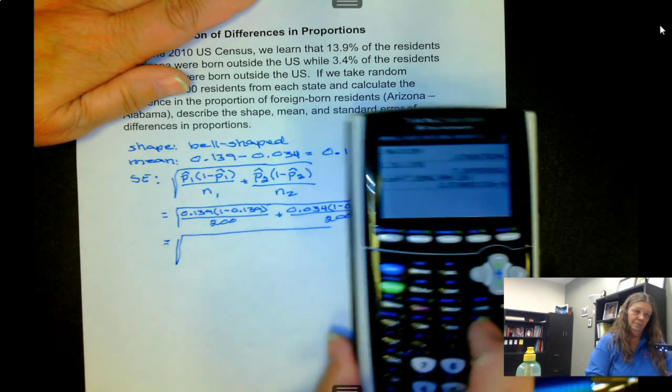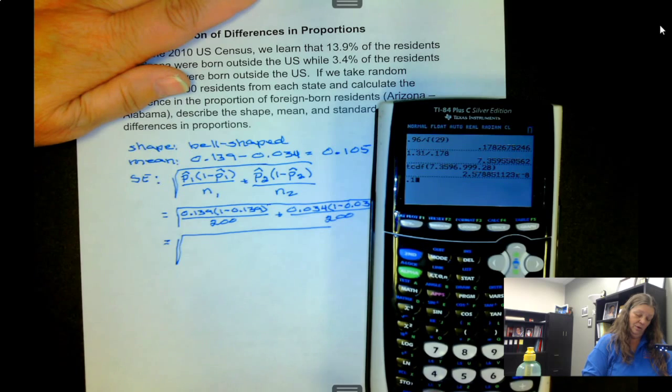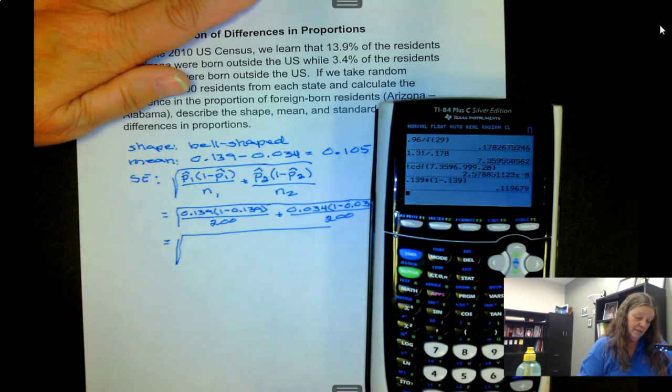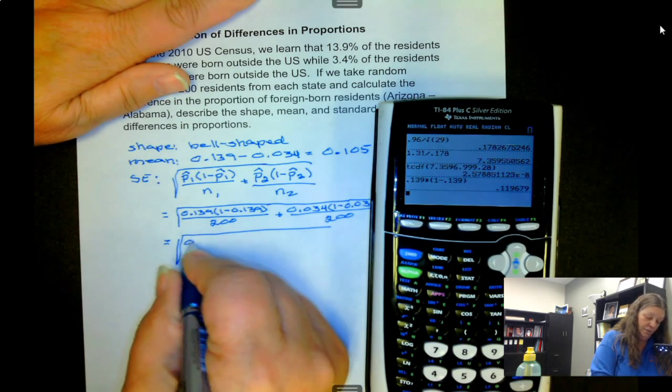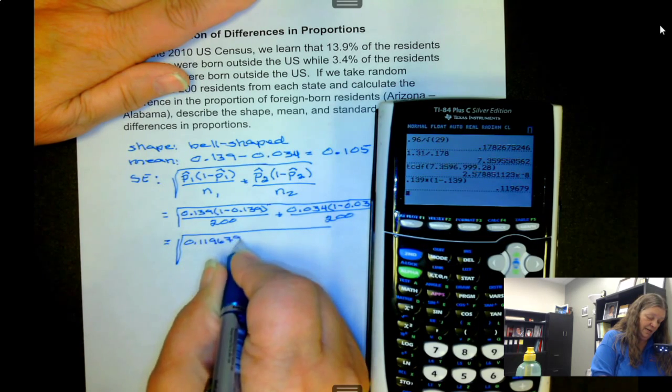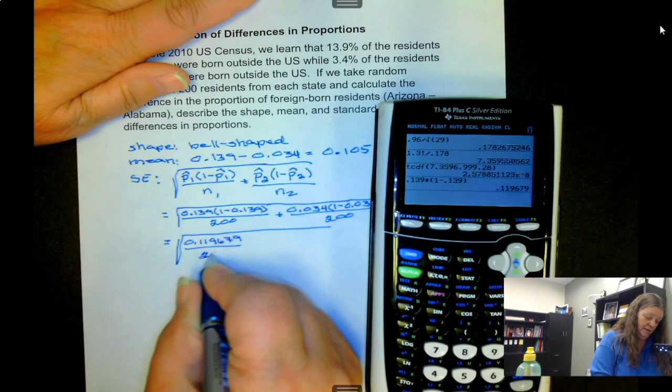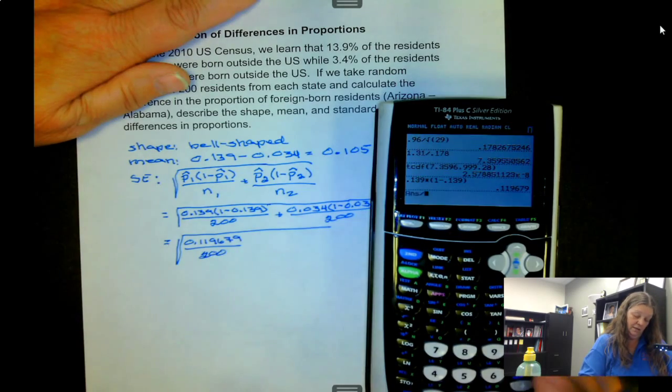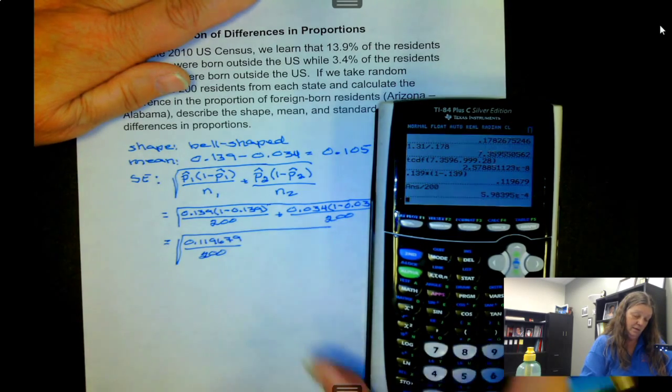So we have 0.139 times 1 minus 0.139 gives us 0.119679 over 200.